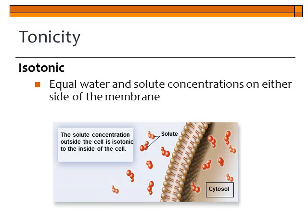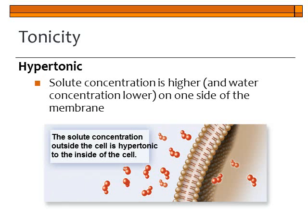We can refer to these gradients using the concept of tonicity. An isotonic solution is when you have an equal amount of solute concentration on both sides of the membrane — no concentration gradient, everything is equal. A hypertonic solution is where solute concentration is higher and water concentration is lower on one side of the membrane compared to the other — that side with more solute and less water is the hypertonic side.